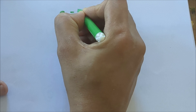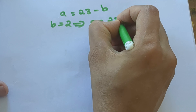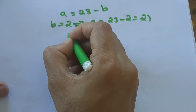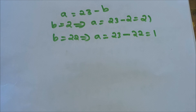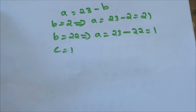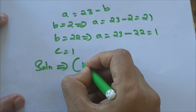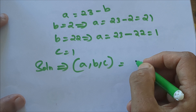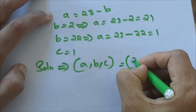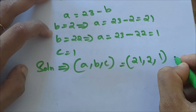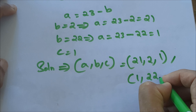We have a equals 23 minus b. When b equals 2, a equals 23 minus 2 which is 21. When b equals 22, a equals 23 minus 22 which is 1. We already found c equals 1. So there are two solutions: (a, b, c) equals (21, 2, 1) or (a, b, c) equals (1, 22, 1).